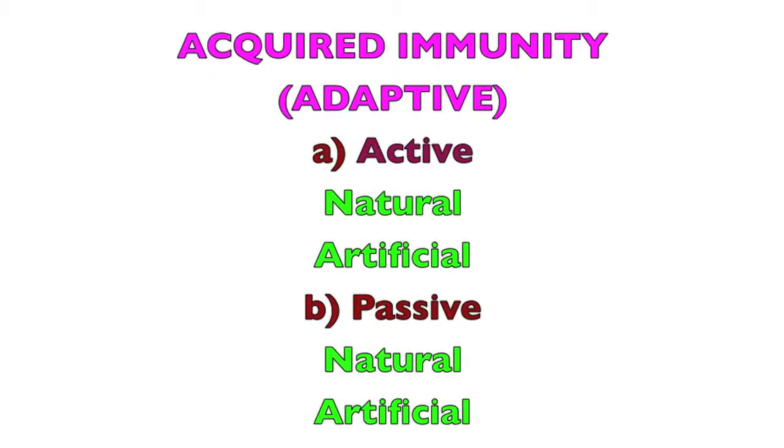Coming to acquired immunity or adaptive immunity: by definition, acquired immunity means the resistance that an individual acquires during their lifetime. There are two types: active acquired immunity and passive acquired immunity. Active acquired immunity means the resistance developed by an individual as a result of an antigenic stimulus, where there is active involvement of the person's immune apparatus — for example, when any pathogen enters the body and stimulates the production of antibodies.